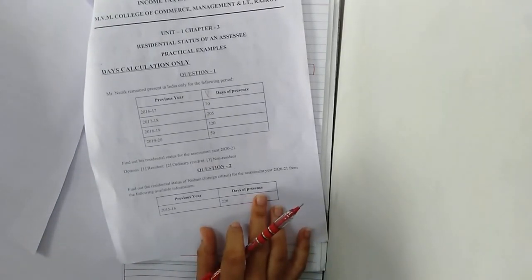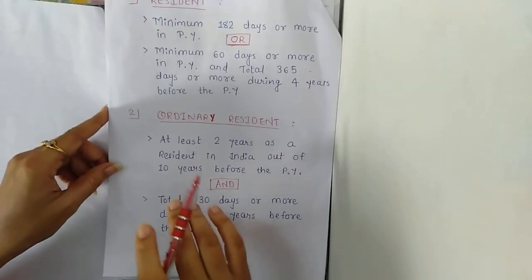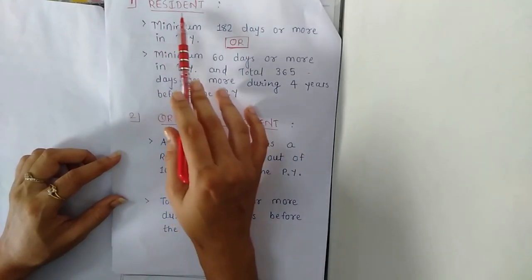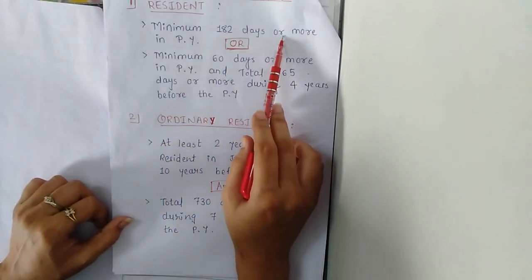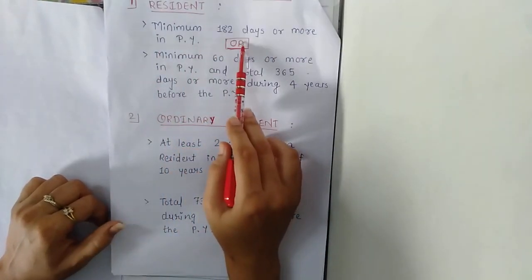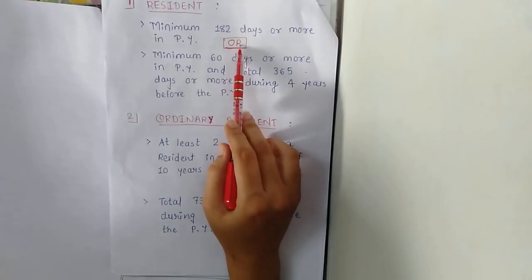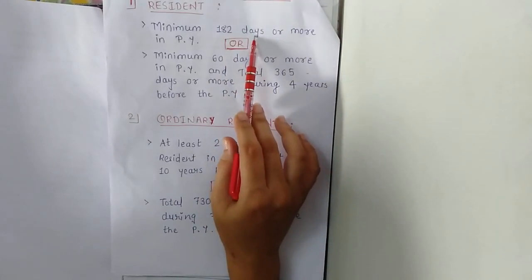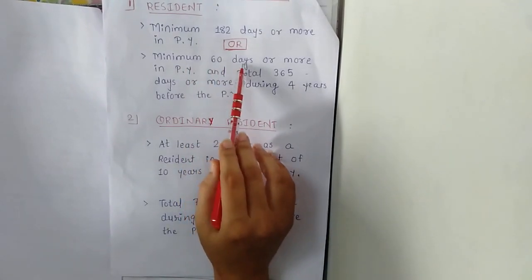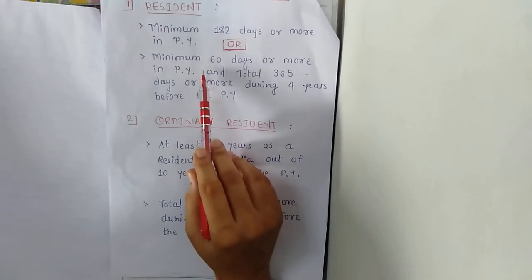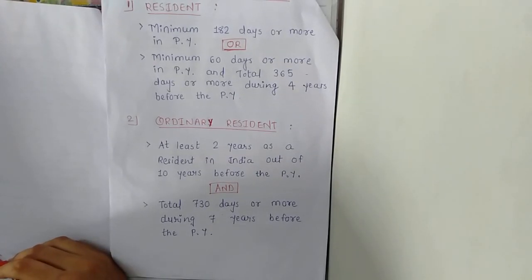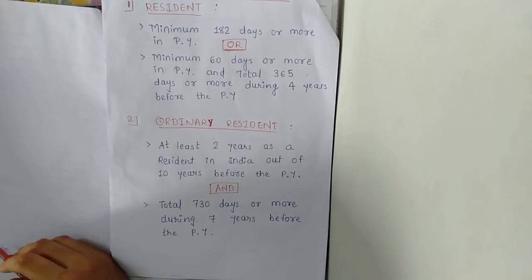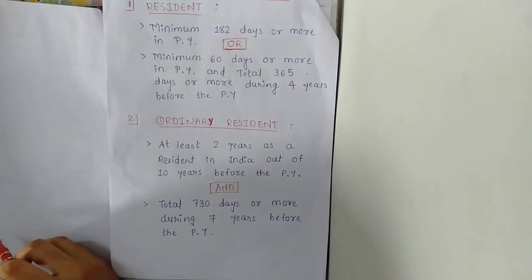Let us revise the conditions of residential status. The first condition for resident status: any individual assessee must remain present for minimum 182 days or more in India during the previous year. That means in the previous year minimum 60 days or more, and total 365 days or more during the four years before the previous year. These are the two conditions and any one condition needs to be satisfied.